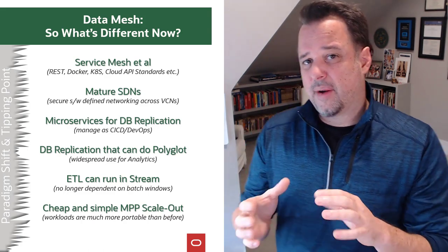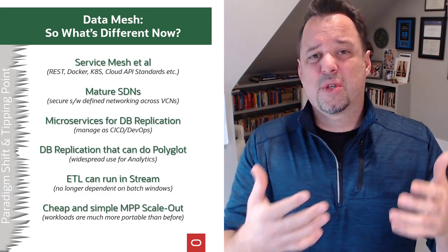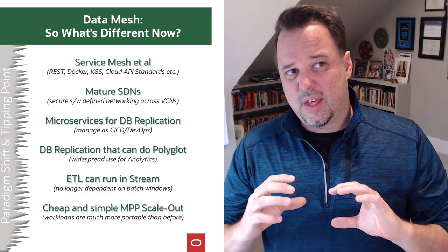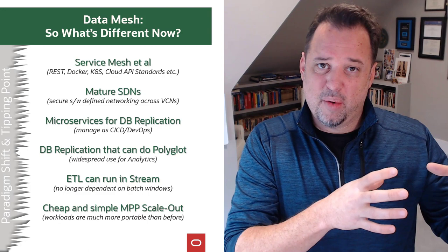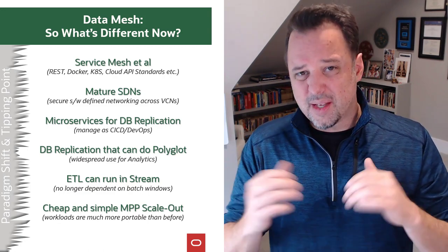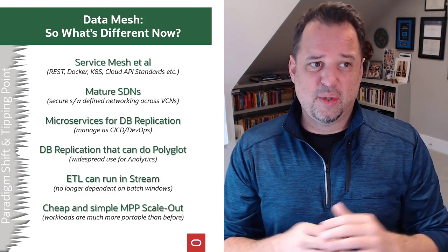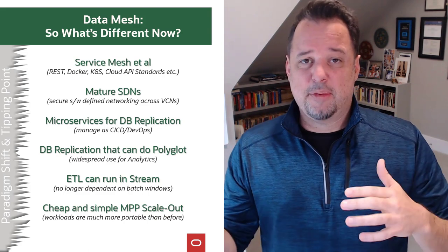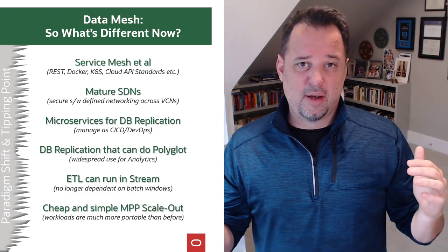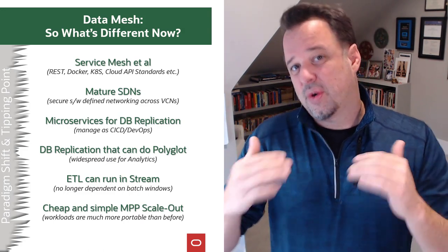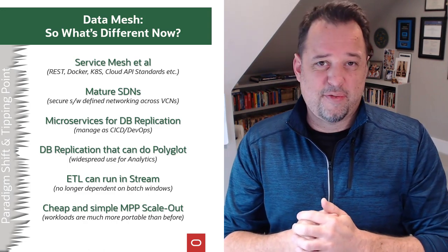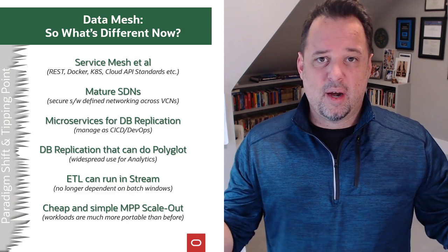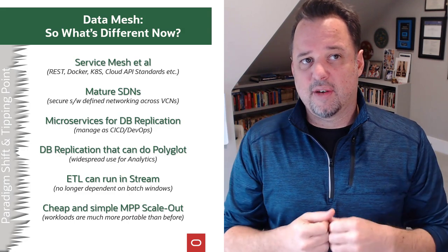What's happened is we've hit a point where several emerging technologies have been gradually maturing over the past several years and have now hit a common inflection point. When we take them together, we can achieve a fundamentally new kind of data architecture — the data mesh. It's not a singular technology but a confluence of different technologies that have reached maturity. These include the service mesh — the evolution of Docker, Kubernetes, and microservices-based REST APIs — being applied in creative and innovative ways to data management. The maturity of software-defined networks and highly secure networking in multi-cloud environments has also made big leaps in just the last five years.